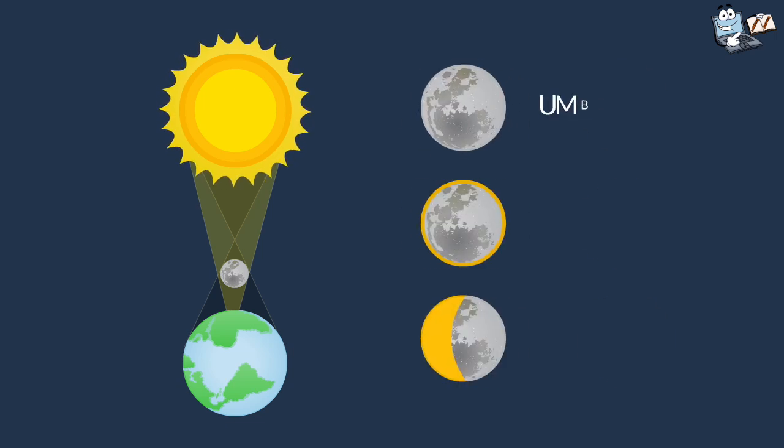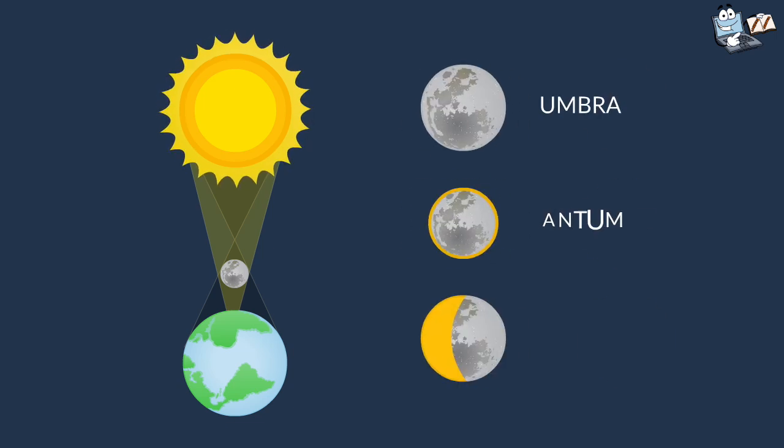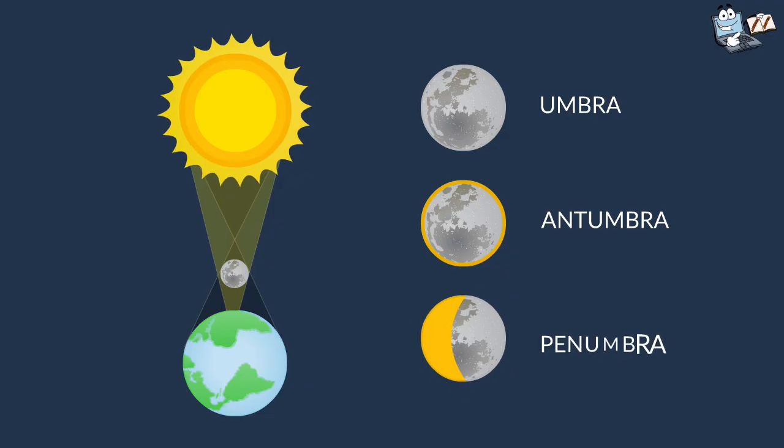First one is called the Umbra. Second one is Antumbra. And third one is Penumbra.